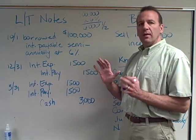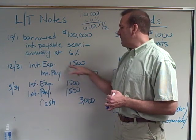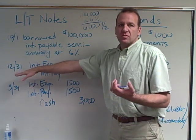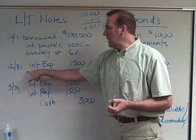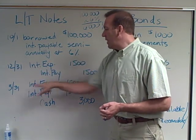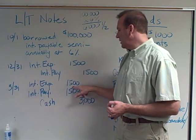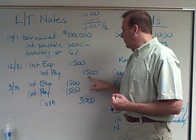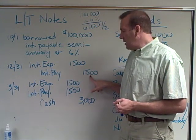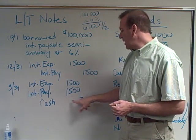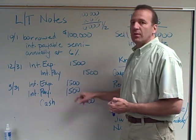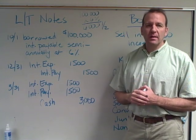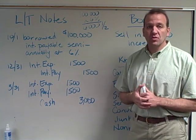This is the correct journal entry. We're putting the expense in the right time periods — $1,500 of expense in 2008 and the other $1,500 in 2009. The payable simply means we hadn't paid it yet. Now in March we're paying the full $3,000 and eliminating the payable. These are the journal entries associated with interest payments on long-term notes payable.